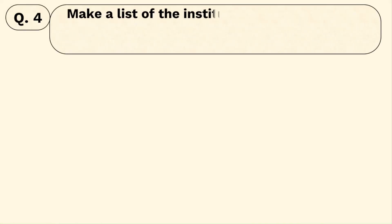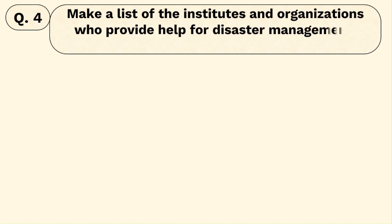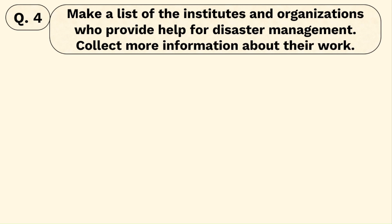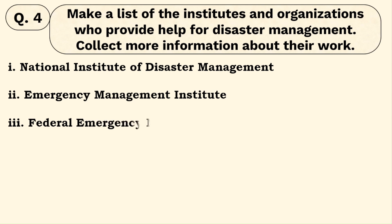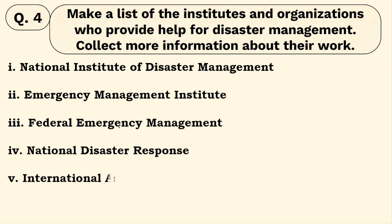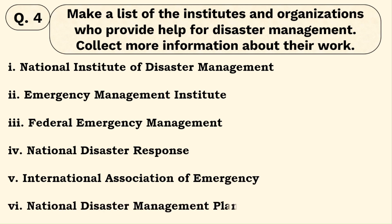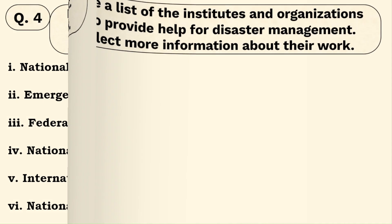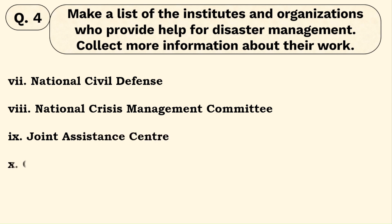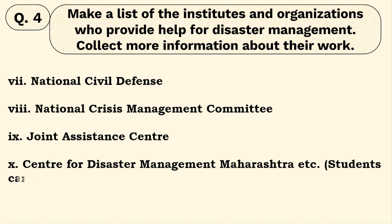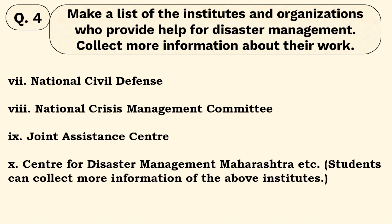Question number four: make a list of institutions and organizations that provide help for disaster management. The key organizations include: National Institute of Disaster Management, Emergency Management Institute, Federal Emergency Management, National Disaster Response, International Association of Emergency Management, National Disaster Management Plan, National Civil Defense, National Crisis Management Committee, Joint Assistance Center, Center for Disaster Management Maharashtra. Students can collect more information about these institutes.